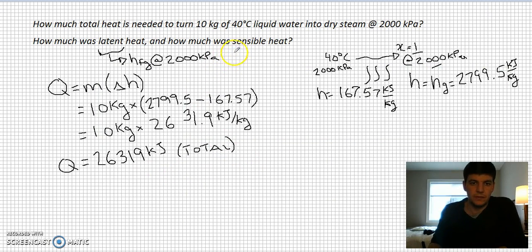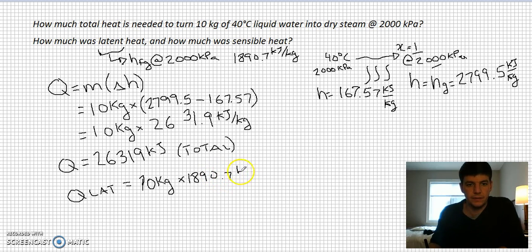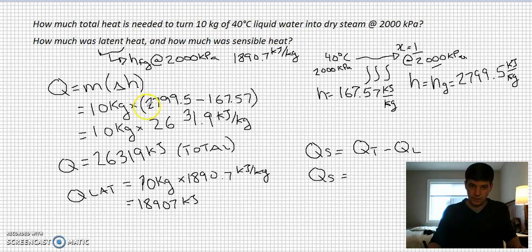If I go back to 2000, my HFG is 1890.7 kilojoules per kilogram. So Q latent equals 10 kilograms times 1890.7 kilojoules per kilogram, which equals 18,907 kilojoules. Q sensible equals Q total minus Q latent. In this case, QS would be 7,412 kilojoules.